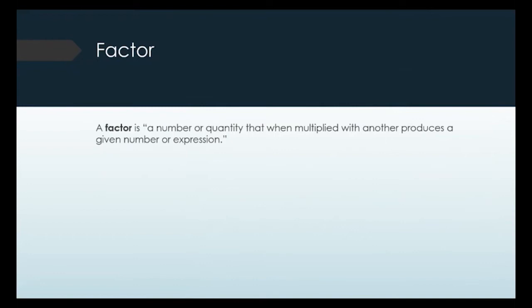A factor is a number or quantity that when multiplied with another produces a given number or expression. This is best understood with an example. If I have 2 times 3, that equals 6, so we call 2 and 3 factors of 6 — they can be multiplied together to get 6.